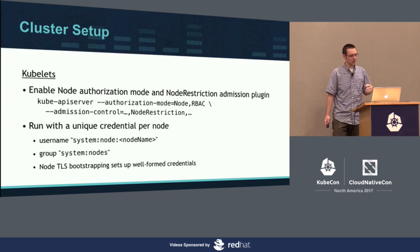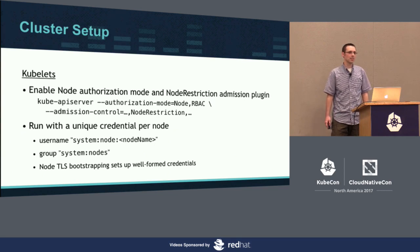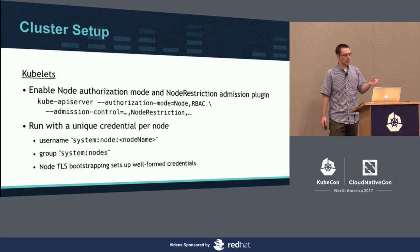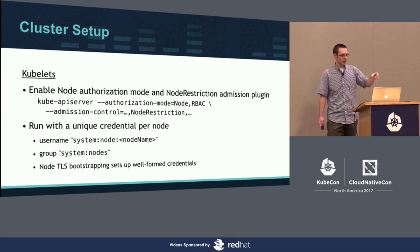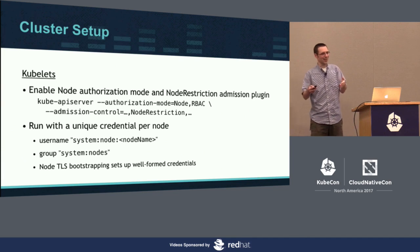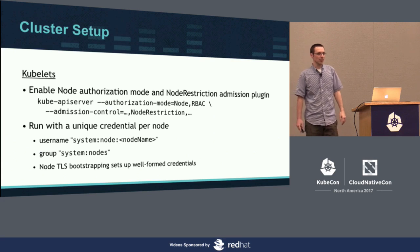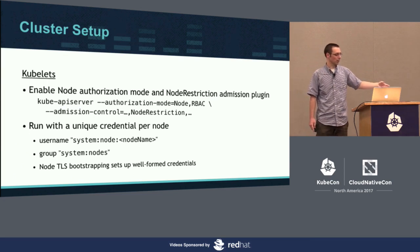That brings us to kubelets. Kubelets are interesting. Originally they started with an RBAC-defined role, but as we started thinking about enforcing node isolation, RBAC didn't seem like a great fit. We actually have a dedicated authorizer for nodes, and the recommendation is to use that in combination with RBAC. You can start up the API server telling it to use the node authorizer and the RBAC authorizer, and if you give your kubelets well-shaped credentials, they will be given permission just to their own pods, secrets, and persistent volumes — not allowed to mess with other nodes, pods, and secrets.